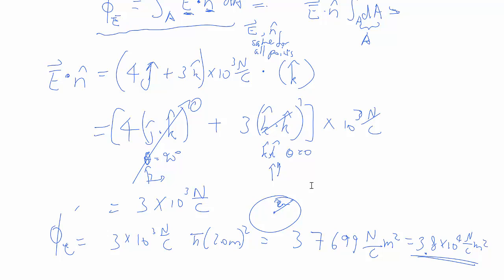So quick review of what electric flux is, why the dot product comes up, and also how we do a dot product using IJK notations.